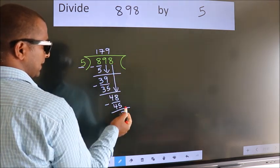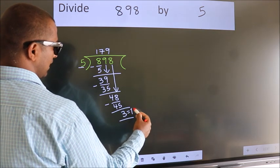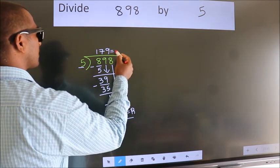No more numbers to bring it down. So we stop here. This is our remainder. This is our quotient.